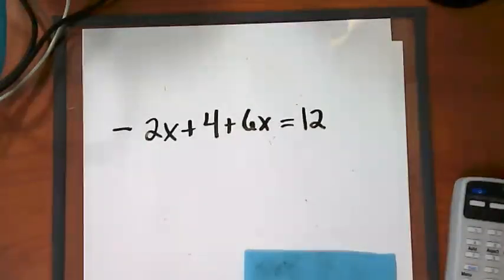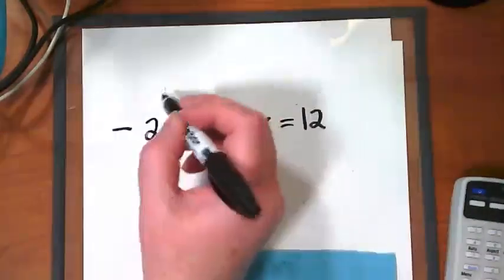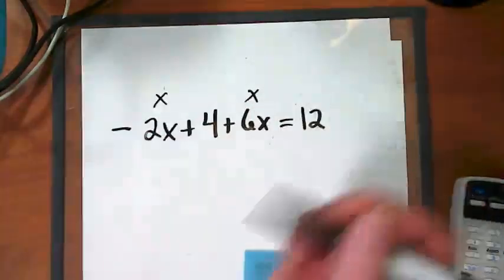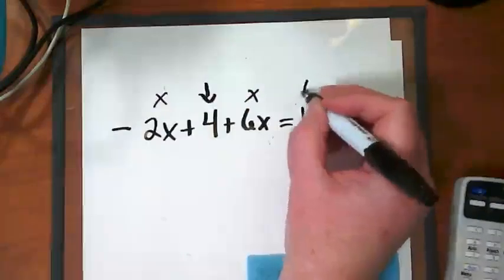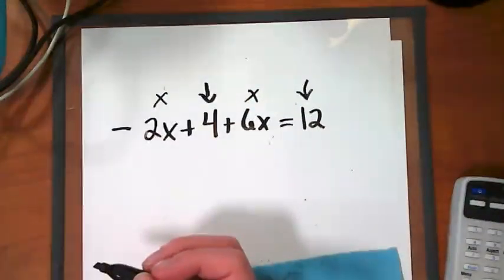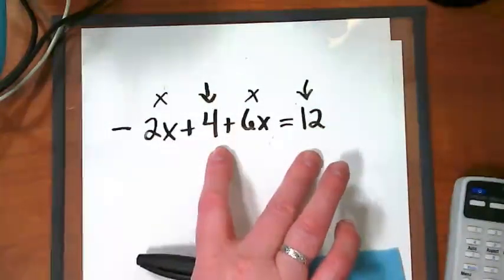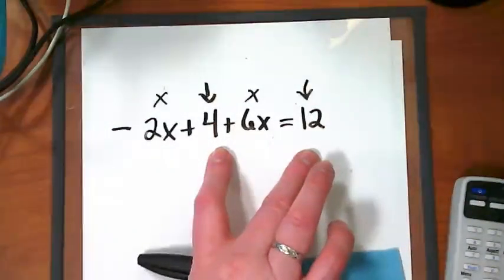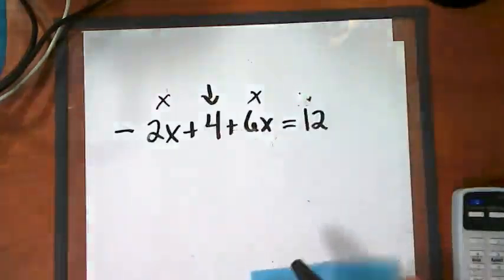What do you notice about the terms that are in this equation? Jeremy? There's like terms there. This and this are like terms because they have x's, and this and this are like terms because they're just numbers. These two are on the opposite side of the equal sign from each other, so I can't do anything with them at first. But I can take those x terms and combine them.